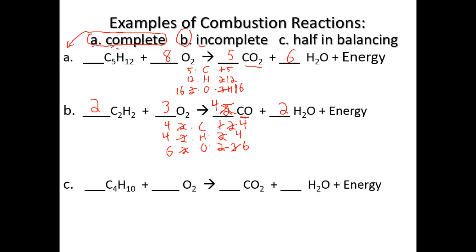The third one will use a half in balancing. C4H10 plus O2 produces CO2 and H2O. This is a complete reaction again. Four carbons, ten hydrogens, two oxygens on the left. One carbon, two hydrogens, two plus one equals three oxygens on the right.